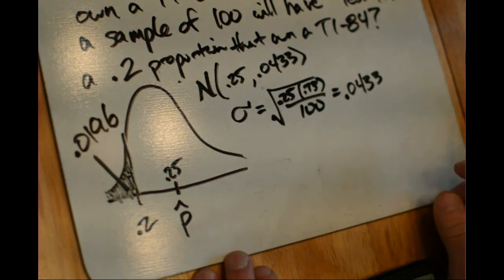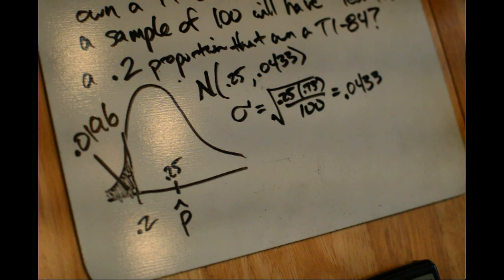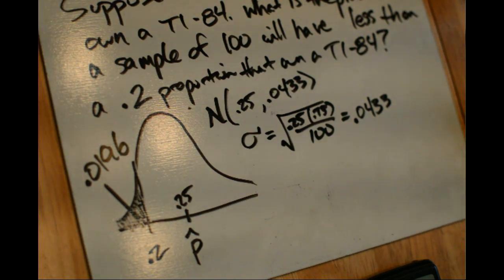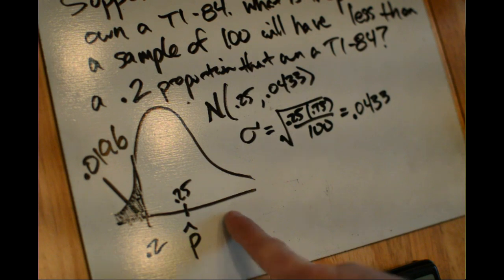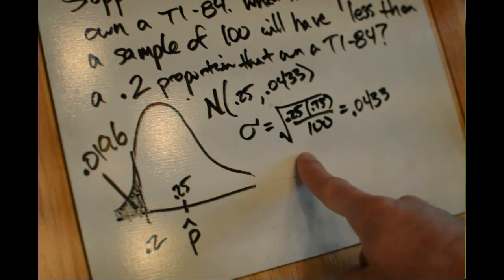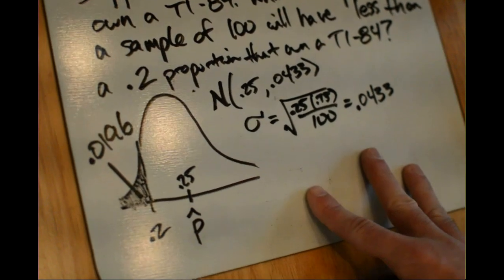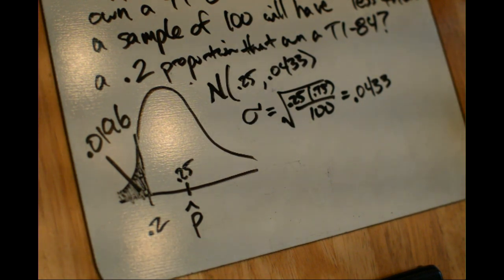So the probability that we take a sample of 100 having less than 0.2 proportion owning a TI-84 is 0.0196. The things we had to show were: number one, our condition that the population was sufficiently large; and that np was greater than 10 and n times 1 minus p was greater than 10 — allowing us to use the standard deviation formula and the normal curve. Then we calculated our standard deviation, used our mean of 0.25, sketched the curve, placed our boundary, and calculated the area. That's the general type of problem you'll see using a sampling distribution for p-hat.